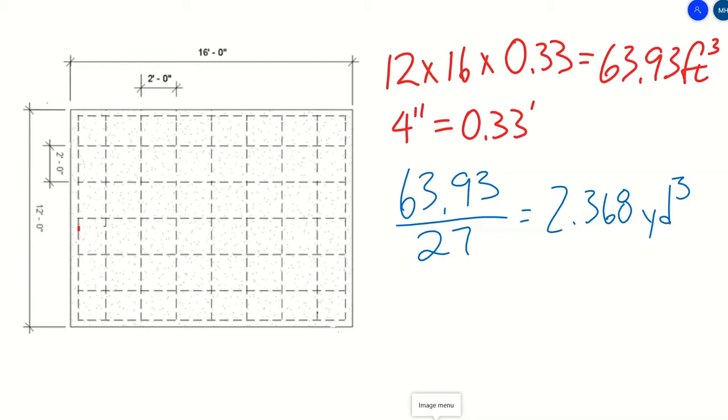So when we order, we're going to have to order 2.5 cubic yards because the smallest amount you can order is half a cubic yard, and since we have this 0.368, we have to round up to the next half.